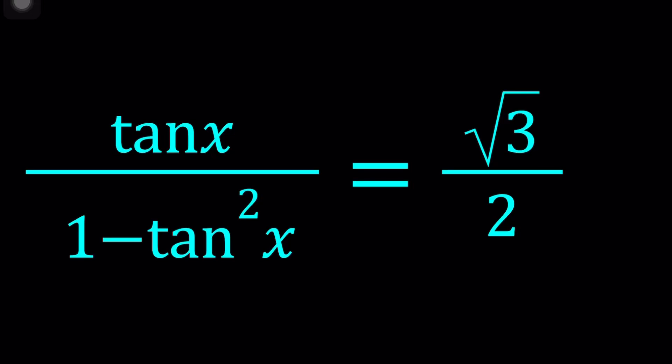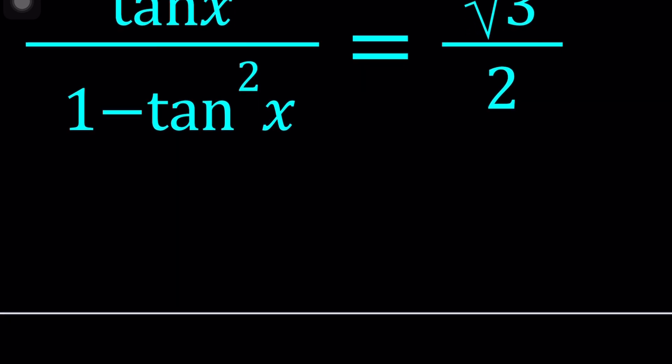Hello everyone. In this video we're going to be solving a nice trigonometric equation with tangent. We have tangent x divided by 1 minus tangent squared x and that is equal to square root of 3 divided by 2. And we're going to be solving for x values. I'll be presenting two methods and let's start with the first one.